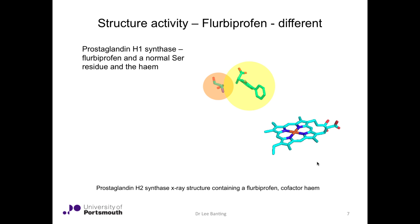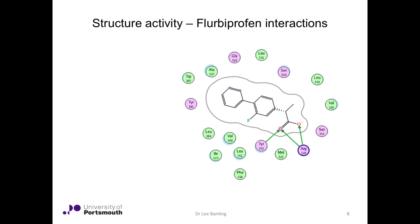In prostaglandin H1 synthase, flurbiprofen binds close to the heme site and adjacent to the serine residue. However, flurbiprofen is quite different in that it doesn't have an acetyl group to transfer to serine, so it isn't an irreversible inhibitor. In the strictest sense, it's a tight binding reversible inhibitor, a covalent modifier — although getting it off the enzyme is actually quite difficult.